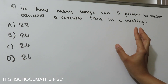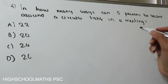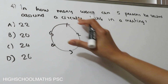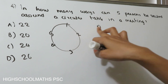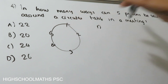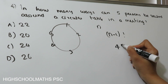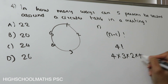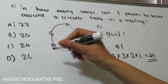Question 4: How many ways can 5 persons be seated around a circular table in a meeting? There are options including 22 to 24. For circular permutations with n elements, the formula is (n-1)! Here n = 5, so the answer is (5-1)! = 4! = 4 × 3 × 2 × 1 = 24. That is the answer.